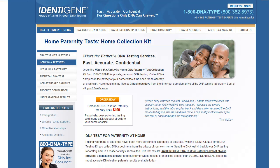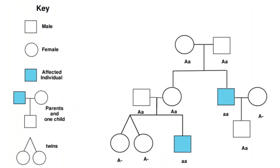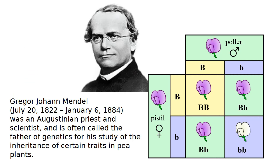The paternity tests, like this one from Identigene, are based on the presence of DNA markers. These markers are differences in the DNA sequence between any two individuals who are only distantly related. Because DNA is the basis of heredity, the number of shared markers is a good measure of relatedness.